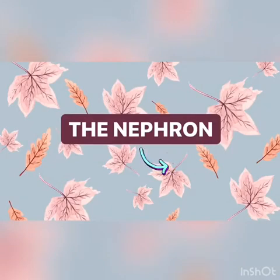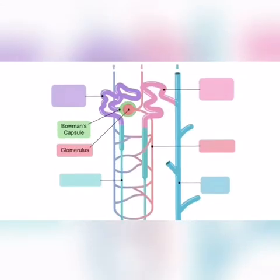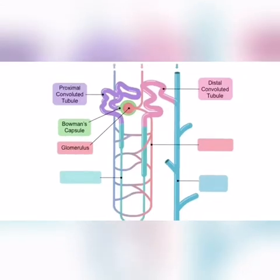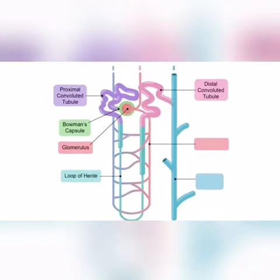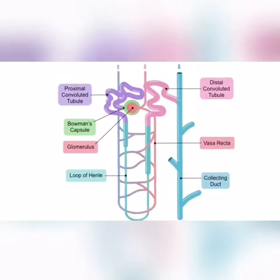Each nephron is made up of the Bowman's capsule, glomerulus, proximal and distal convoluted tubules, loop of Henle, the collecting duct, and also the vasa recta.